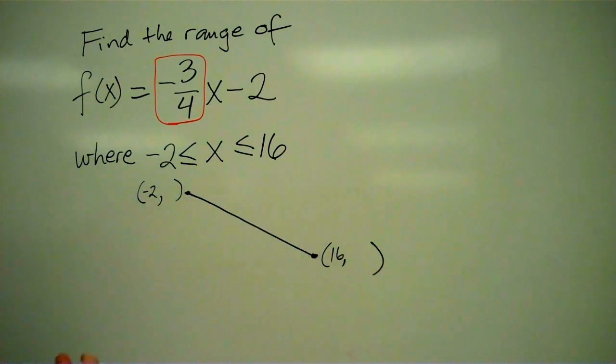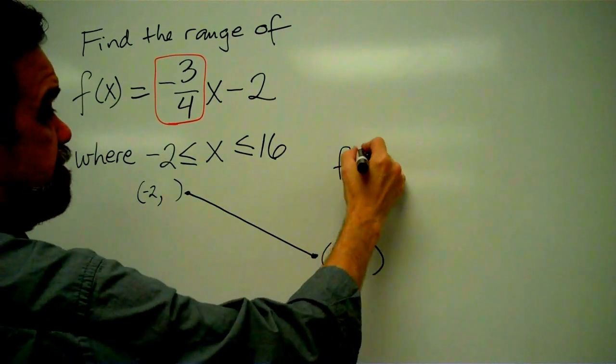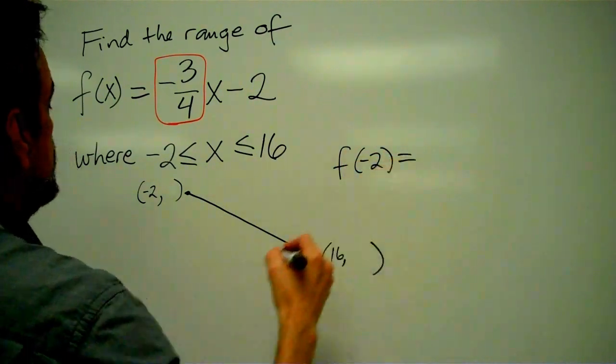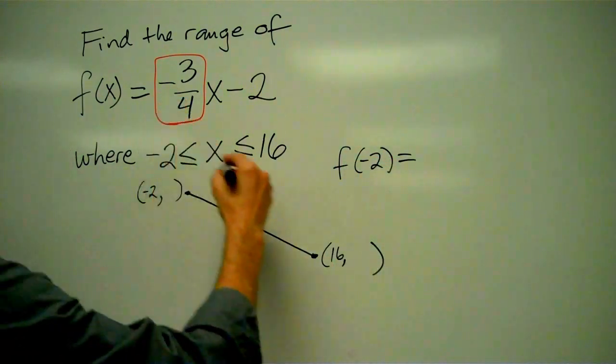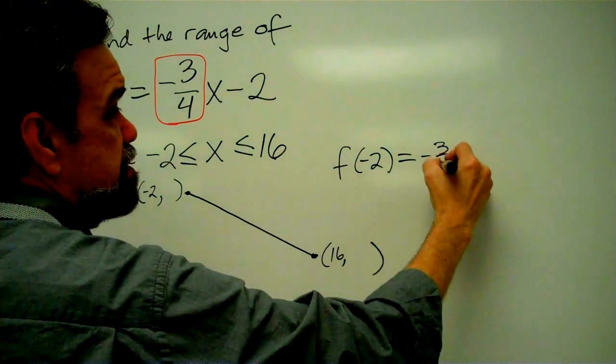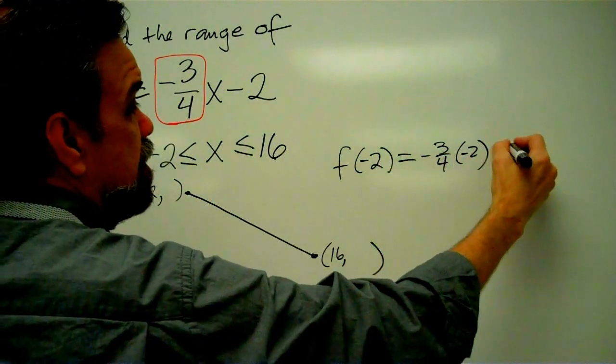Let's find the y coordinates of these two endpoints. And that's a pretty simple process. All we have to do is just say, well, what's f of negative 2? f of negative 2 is going to be negative 3 fourths times negative 2 minus 2.